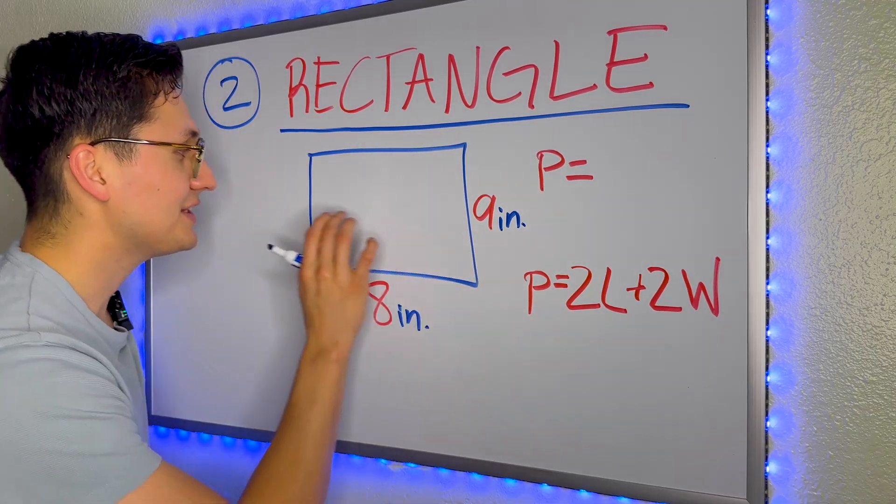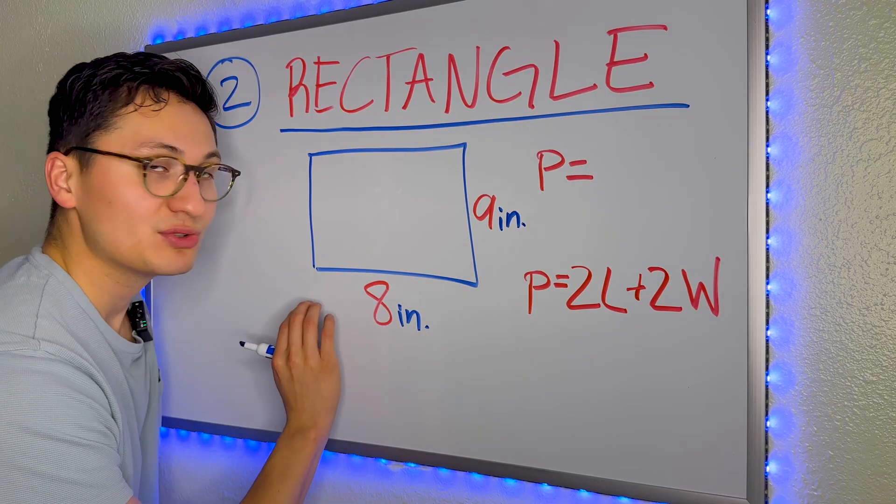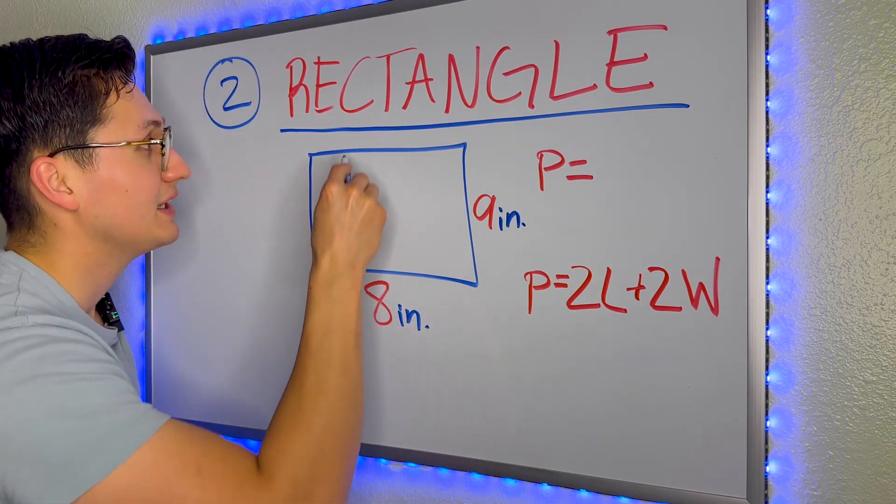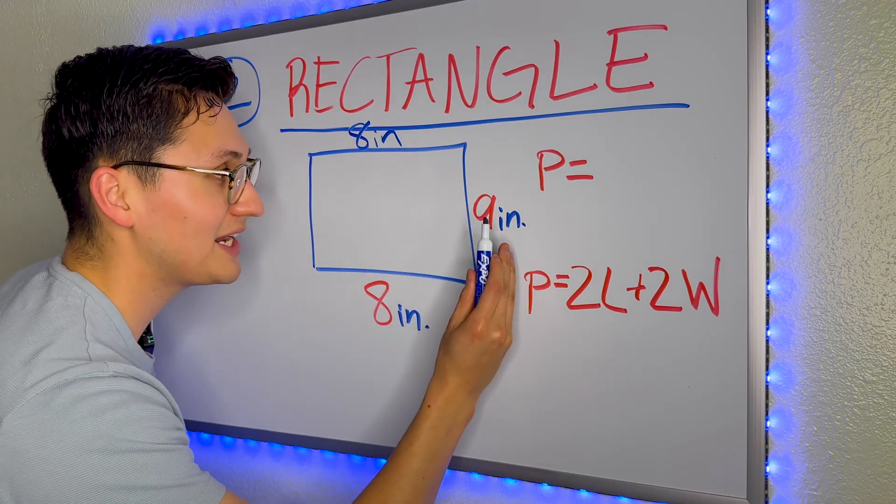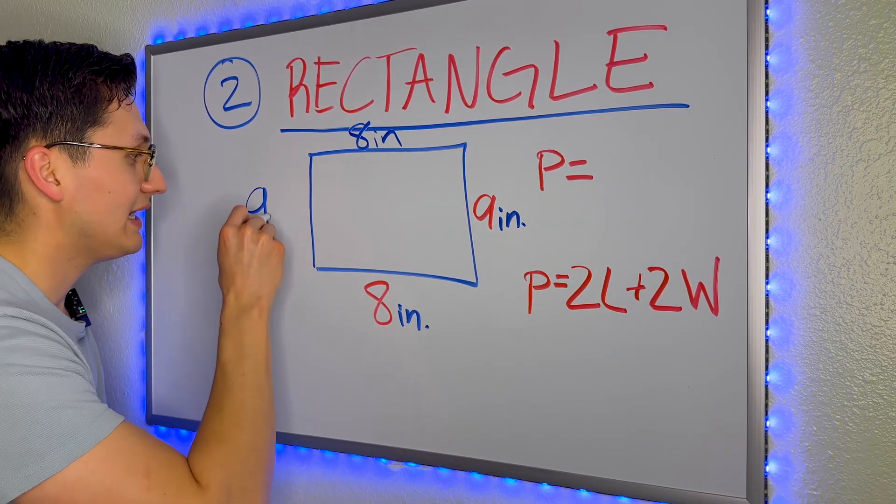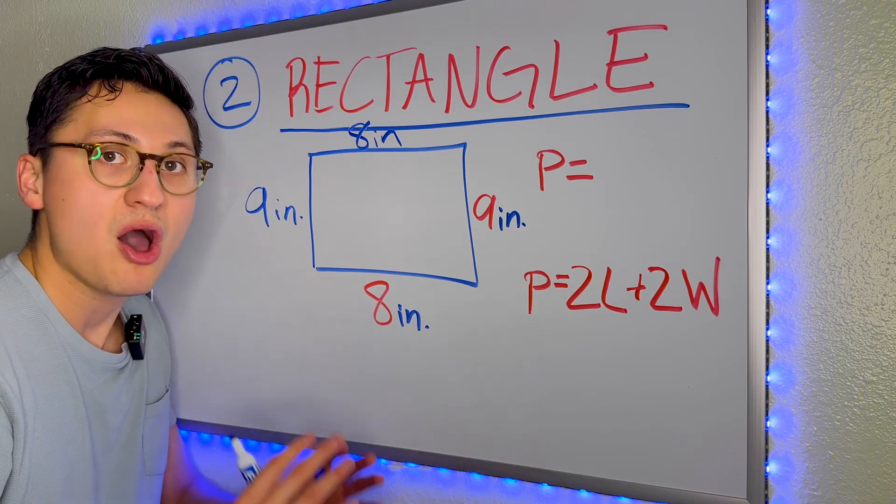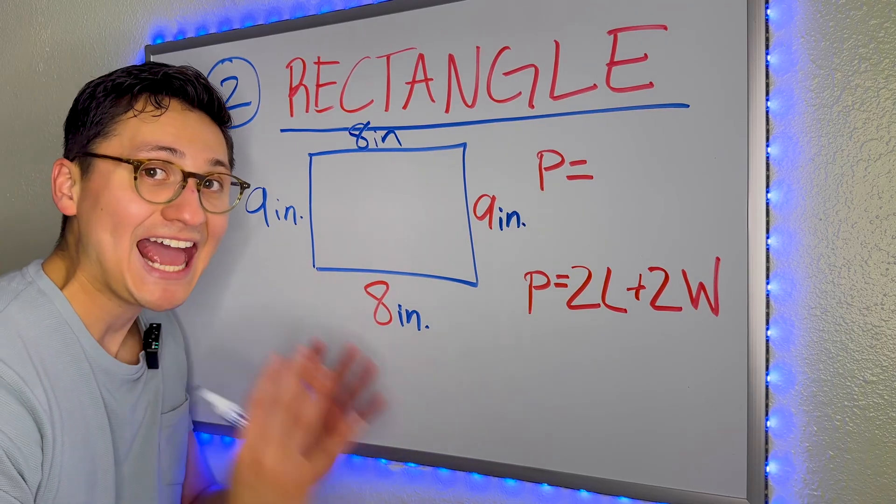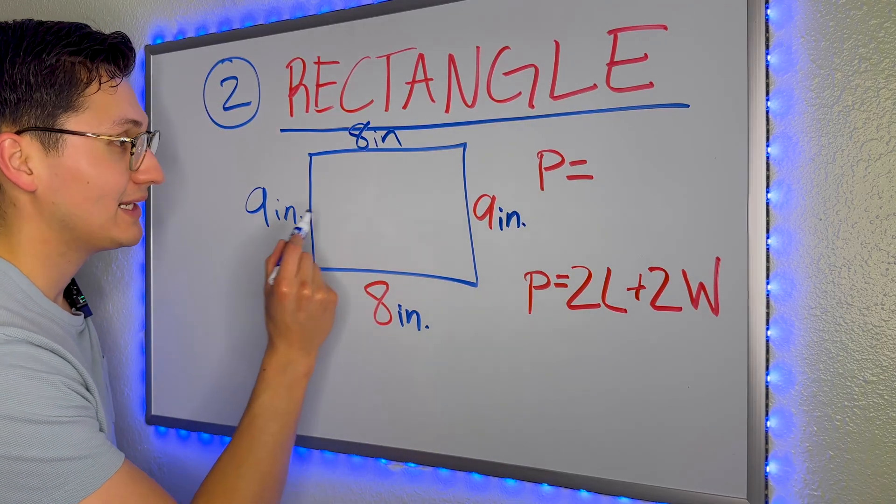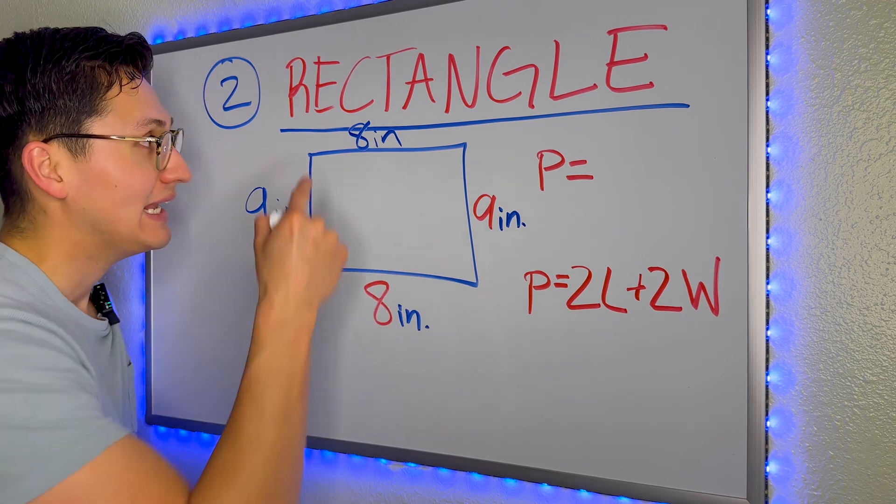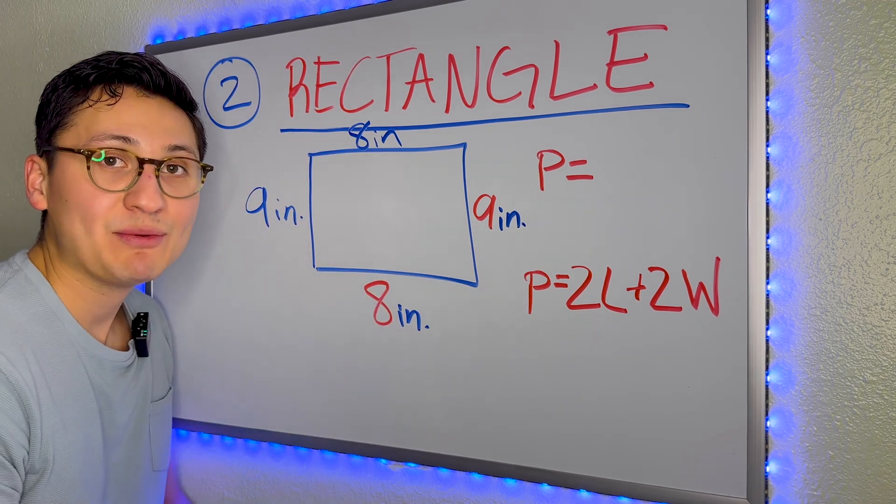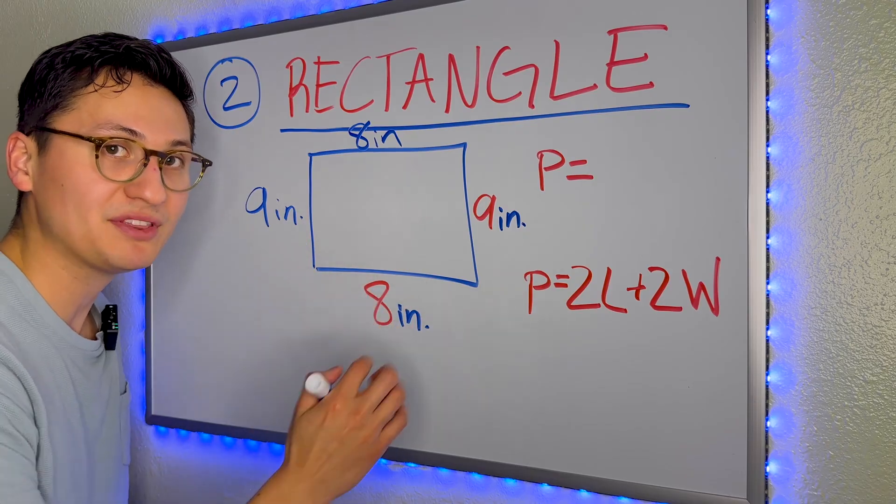And one thing we know about rectangles is that the opposite sides are equal. The adjacent sides are equal. So if the bottom is eight inches, the top is eight inches. If the right side is nine inches, the left side is nine inches. And in order to find perimeter, all we have to do is add. So we can add the nines together, then the eights. And then we combine the sum of both numbers.